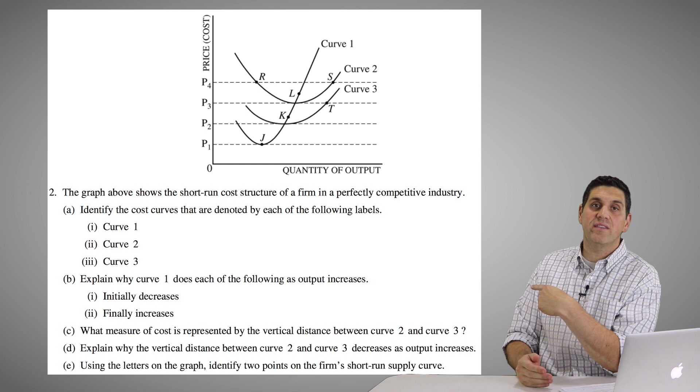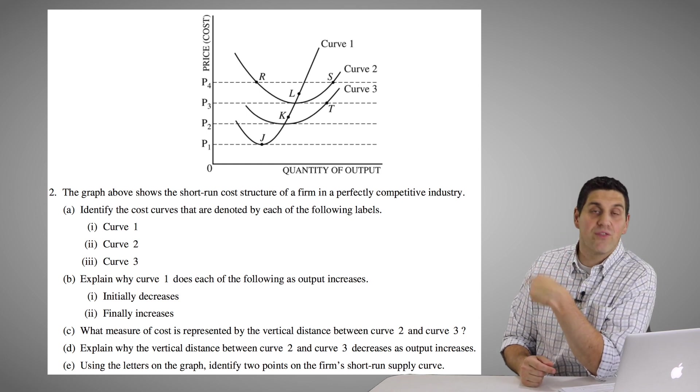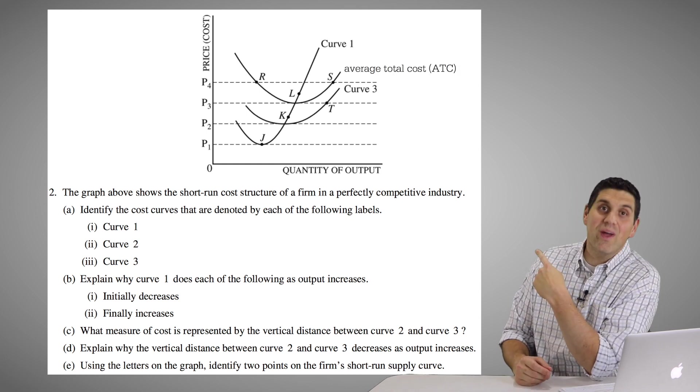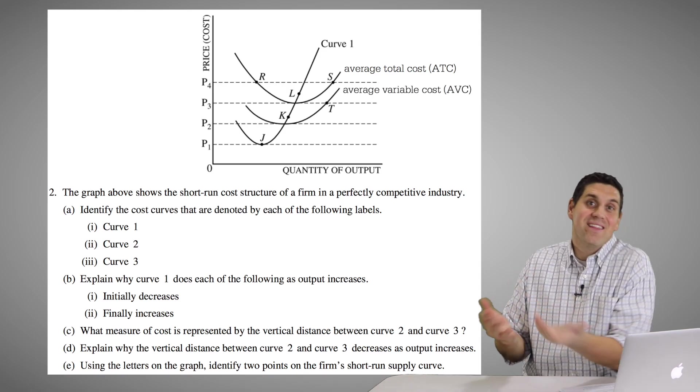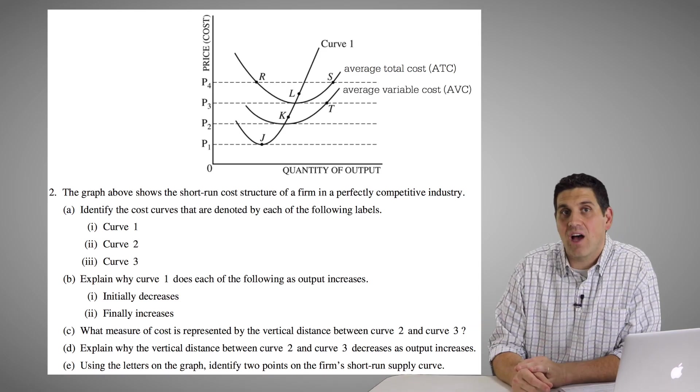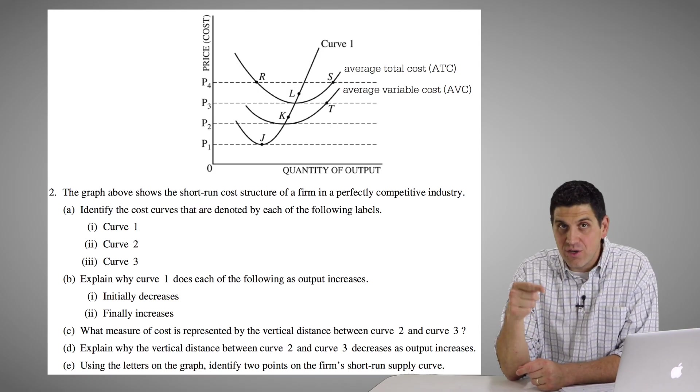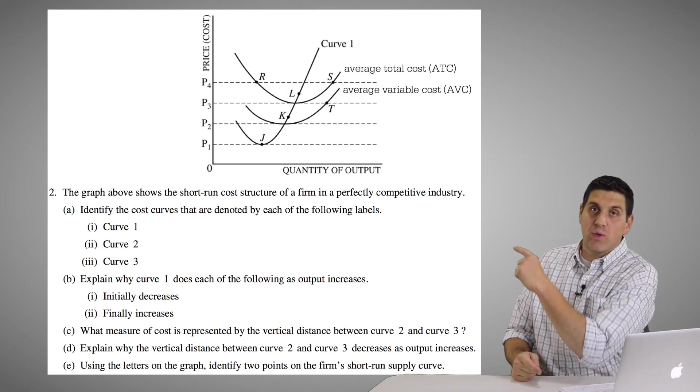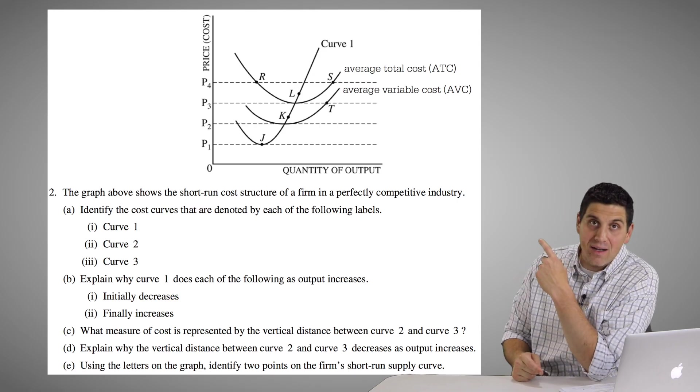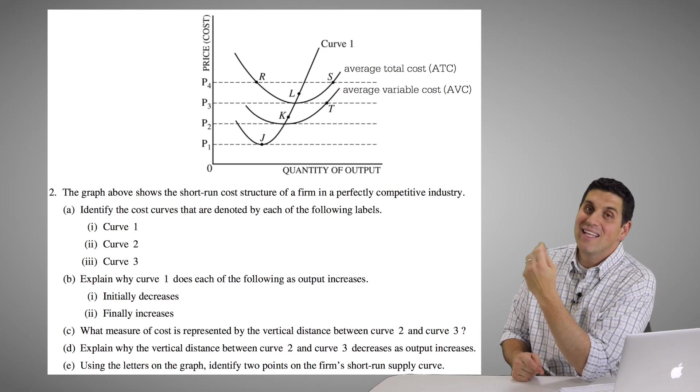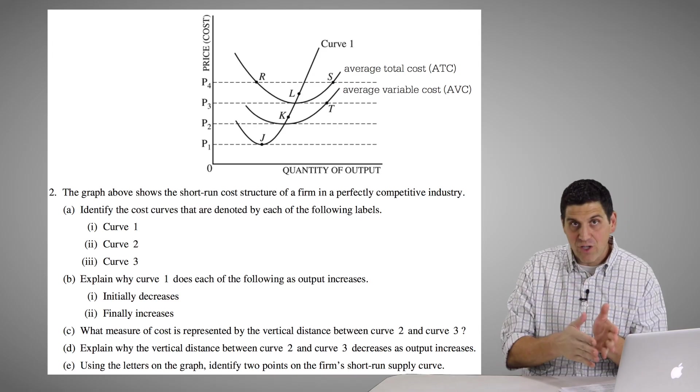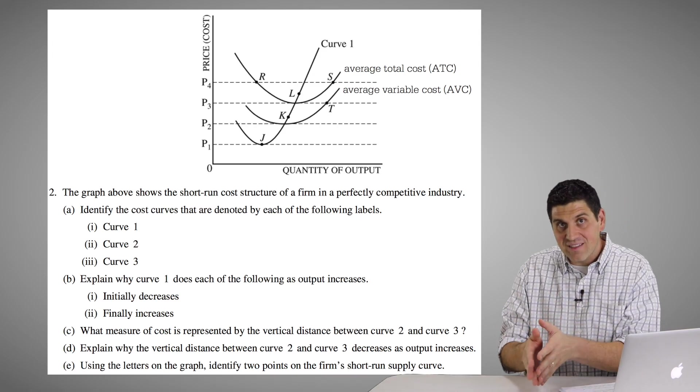In part C, what is the vertical distance between curve two and curve three? Well, curve two is the average total cost, curve three is the average variable cost. The distance between them is the average fixed cost. Notice, not the fixed cost, the average fixed cost. So the distance between these two curves, notice they're not parallel, the vertical distance in between is the average fixed cost. Because average variable plus average fixed equals average total.